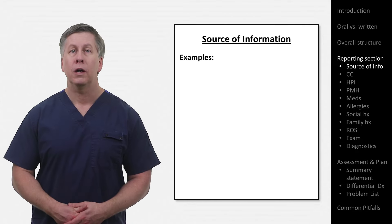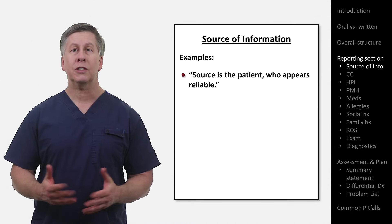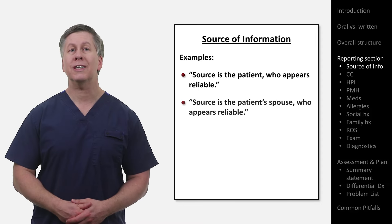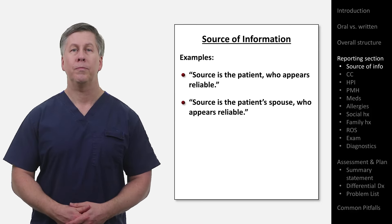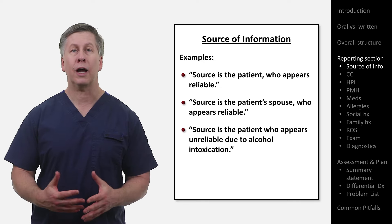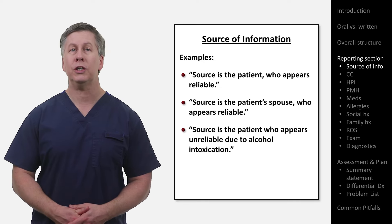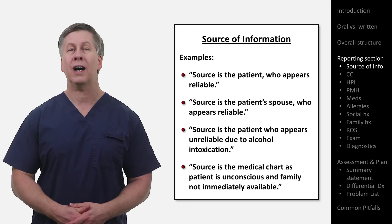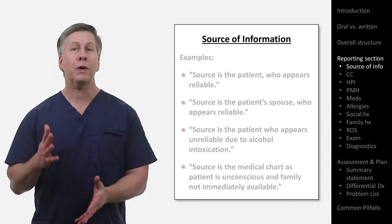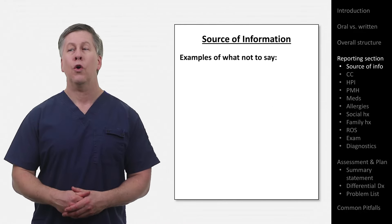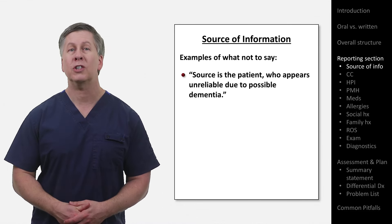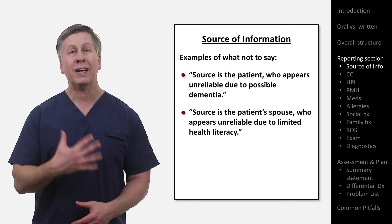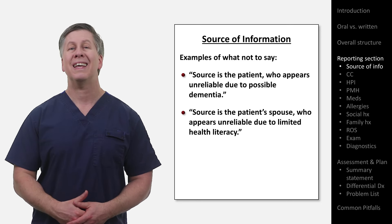Some examples: the source of information could read, 'source is the patient who appears reliable.' Or for a patient who is currently unconscious, 'source is the patient's spouse who appears reliable.' Or 'source is the patient who appears unreliable due to alcohol intoxication.' Or 'source is the medical chart as the patient is unconscious and family is not immediately available.' Where you can run into a problem is with statements like 'source is the patient who appears unreliable due to possible dementia' or 'due to limited health literacy.' I recommend avoiding statements like this, even if you believe them to be true.